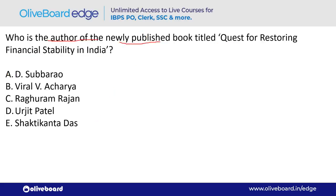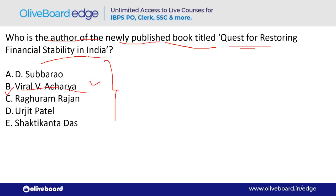Who is the author of the newly published book titled 'Quest for Restoring Financial Stability in India'? The answer is Viral V. Acharya — option B. He is the former Deputy Governor of RBI.